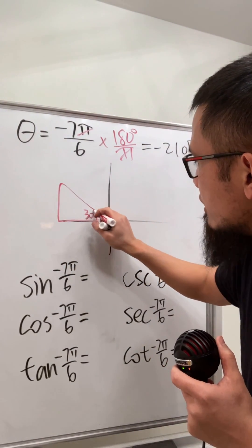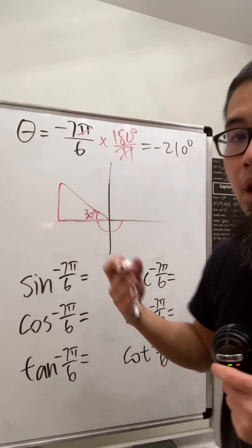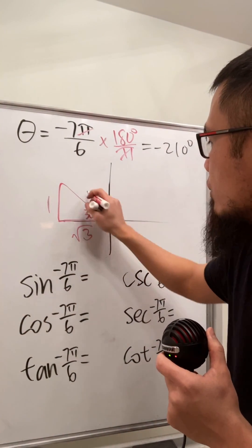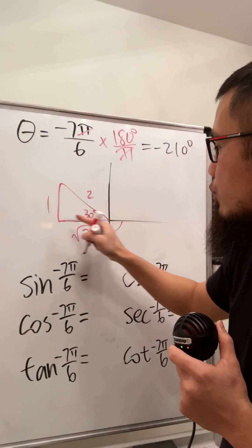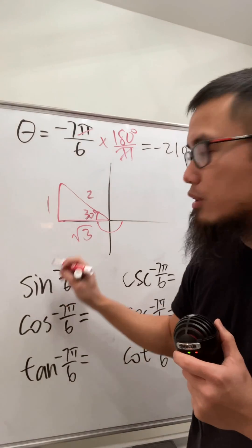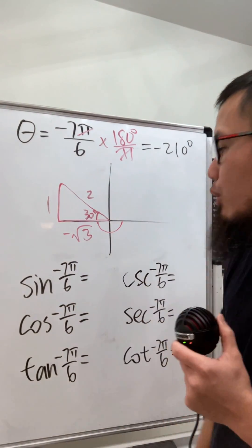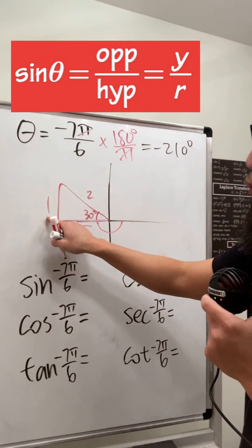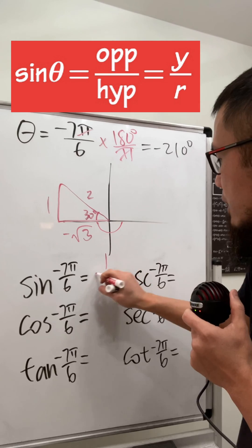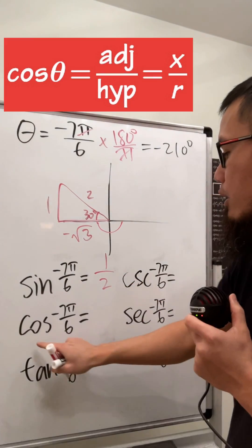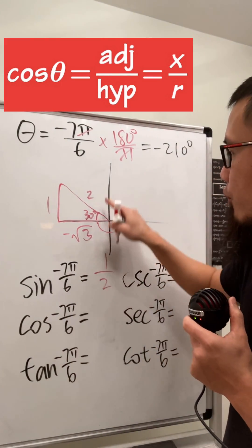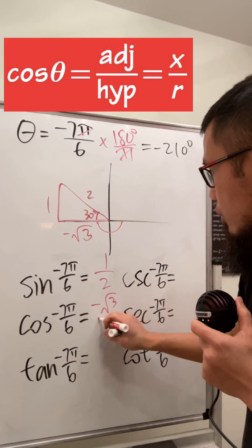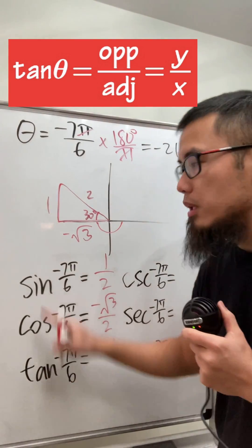This is the triangle with the little angle of 30 degrees, and the ratio of the sides is 1, square root of 3, and 2. From here to here is to the left so we have negative. Sine is y over r, which is one over two. Cosine is x over r, which is negative square root of 3 over 2.